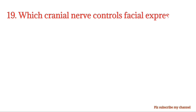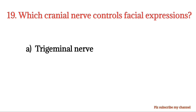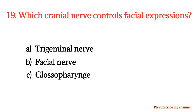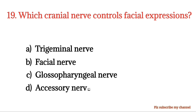MCQ number 19. Which cranial nerve controls facial expression? Option A: Trigeminal nerve. Option B: Facial nerve. Option C: Glossopharyngeal nerve. Option D: Accessory nerve. The right option is Option B.